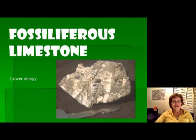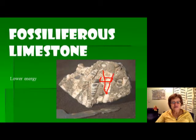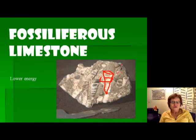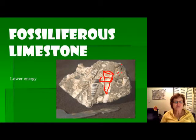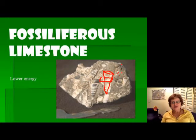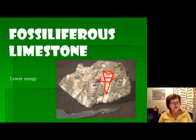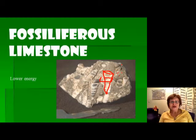The fossiliferous limestone is named for the fact that it always has visible fossils in it — things like snails. Other than that, the limestone itself is pretty fine-grained, which means it settled in relatively deep water. The Coquina and the Oolitic limestone are usually light-colored because they form in oxygen-rich environments, but with the fossiliferous limestone the color doesn't really have much meaning — it just tells you how much oxygen was in the environment.